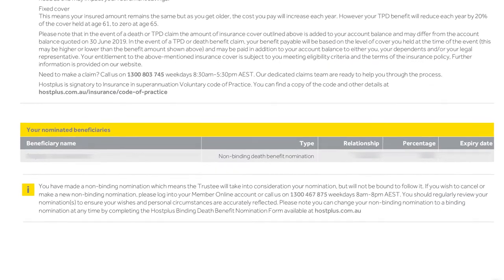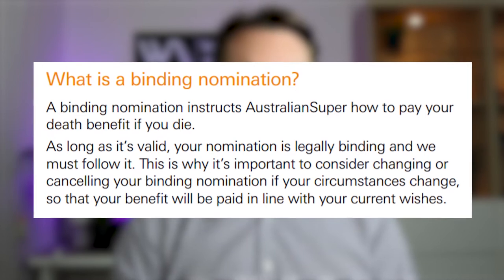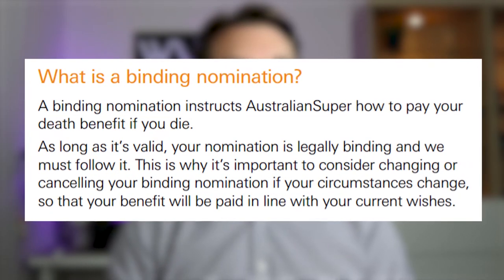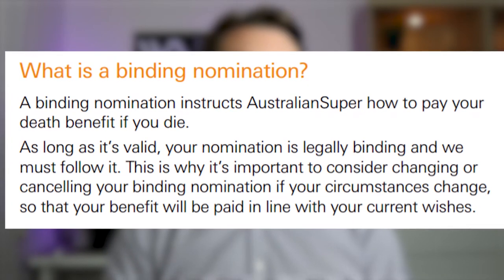The last section to look at is your nomination. Often your superannuation — especially when you add in those insurances — will probably be the biggest asset you have in the event that you pass away. You want your money to go to the person you want it to go to. If you don't have a nomination, your super fund has to decide who it goes to, and that can be a long process. You can nominate what's called a binding nomination. To quote Australian Super: 'A binding nomination instructs Australian Super how to pay your death benefit if you die. As long as it's valid, your nomination is legally binding and we must follow it.' So consider having a binding nomination so that your super and insurances go to the correct person.